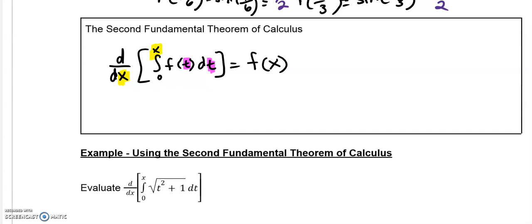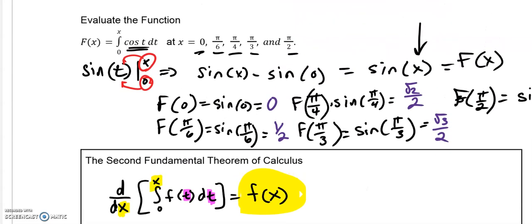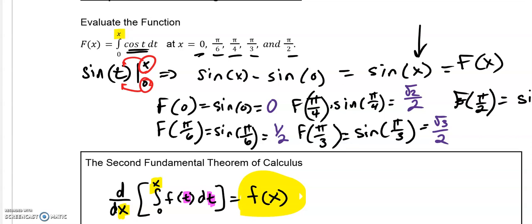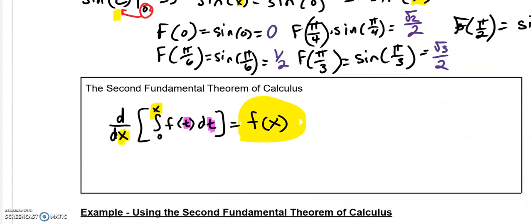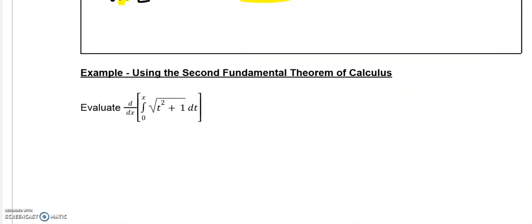The integral and the derivative will simplify out, and it will be in terms of your upper limit. Just like what we did up here, this became in terms of, instead of t, it became in terms of the sine of x, which is what we were looking for. So looking and applying that understanding here.